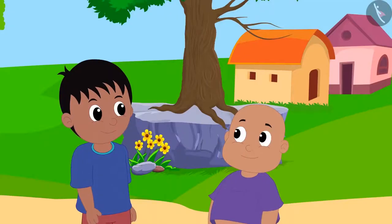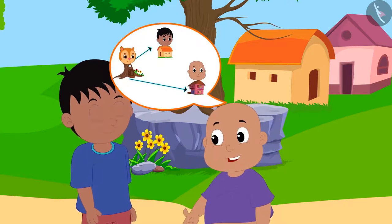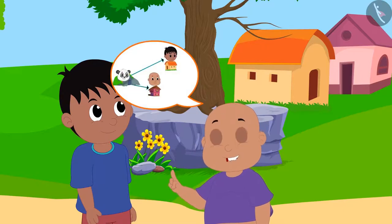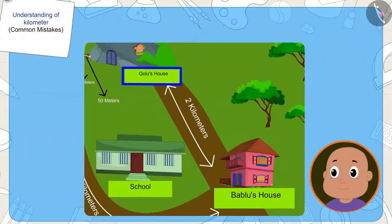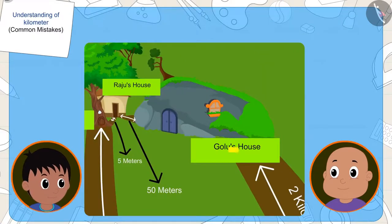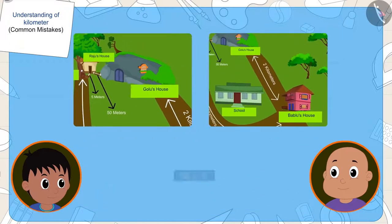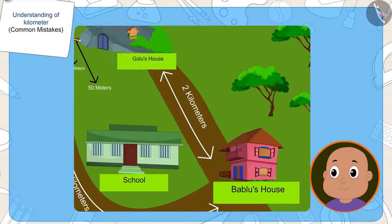Now, Bablu told Raju, even though his house is farther from Chanda's house, but it is definitely closer to Golu's house. His house is two kilometers away from Golu's house. And Raju's house is 50 meters away from Golu's house. And two less than 50. Therefore, his house is closer to Golu's house.